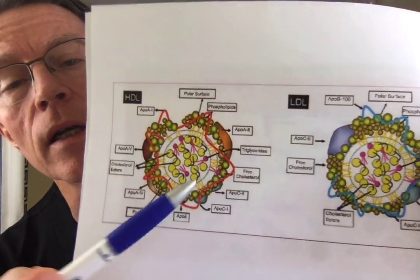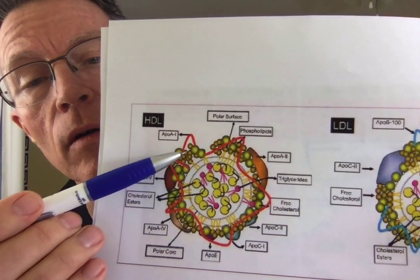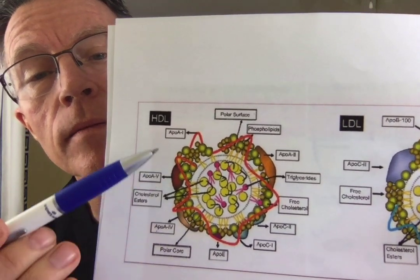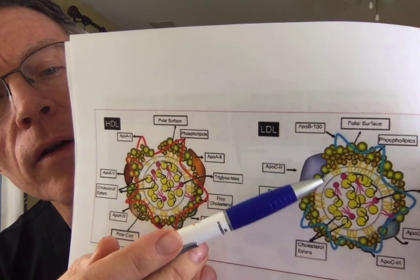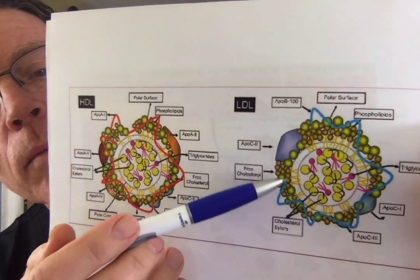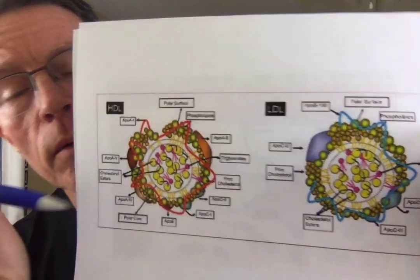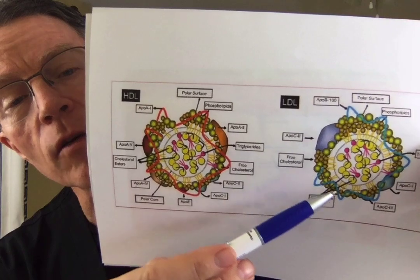Looking at another diagram of HDL and LDL: you can see the lipid core of cholesterol and triglycerides, with proteins holding the phospholipids together. On the HDL you get ApoA1; on the LDL you get ApoB. ApoE is also present in LDL particles. ApoE comes in variants 2, 3, or 4 — those with one copy of ApoE4 have a significantly higher risk for dementia, heart attack, and stroke, and two copies of ApoE4 carries a much higher risk for dementia.